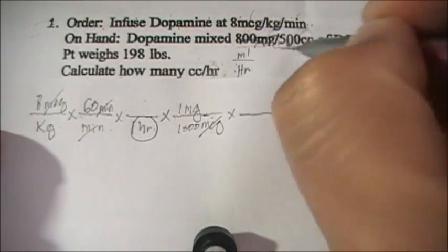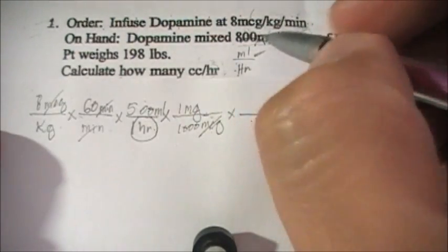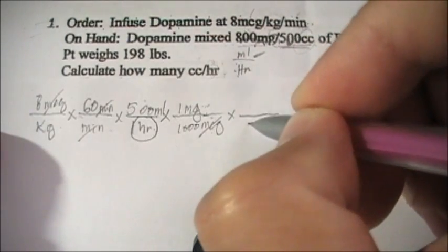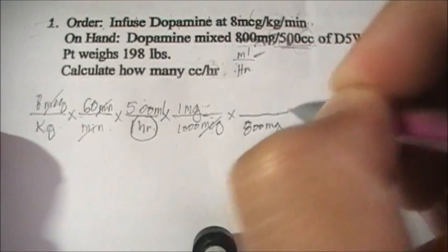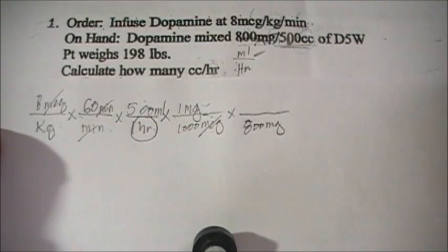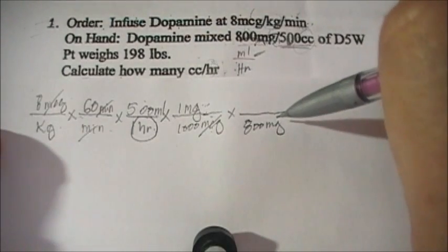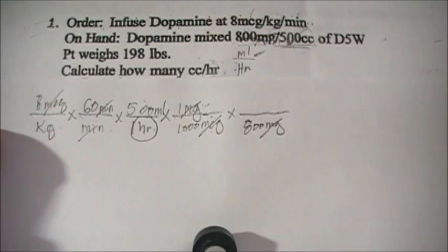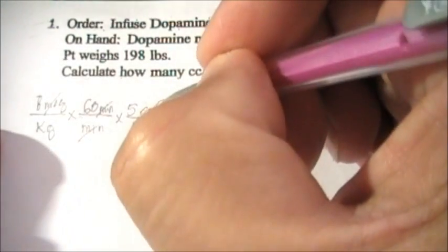We have 800 milligrams and 500 mL from the stock. Since mL is always the numerator in our goal, we put 500 mL in the numerator and 800 milligrams in the denominator — so that milligrams cancels with the milligrams above. After canceling milligrams and milligrams, we now have mL in our expression, but we're not done yet because we still need to cancel kilograms.